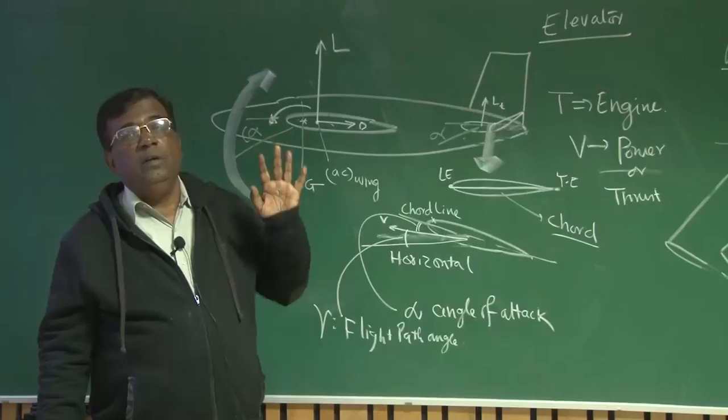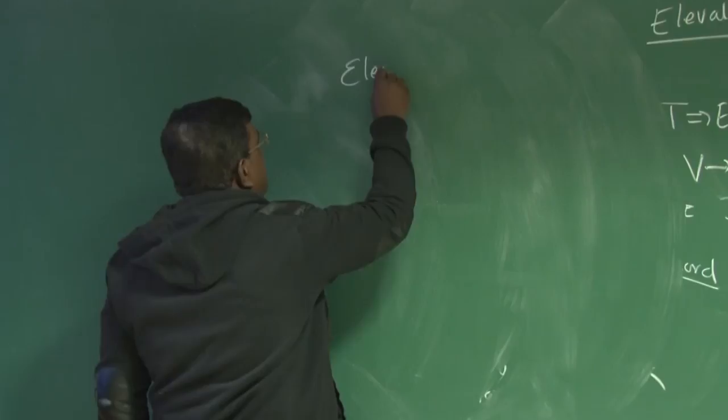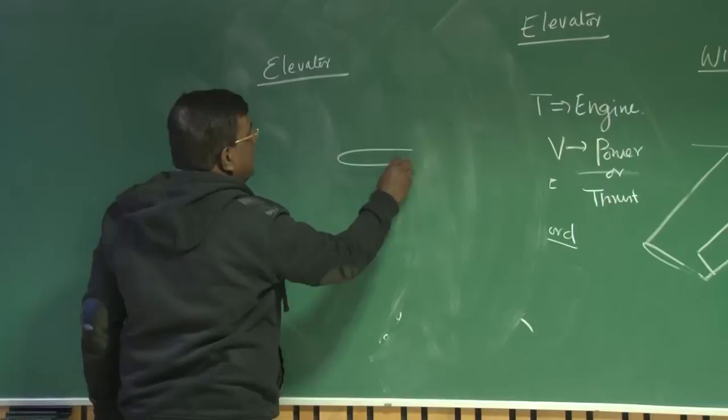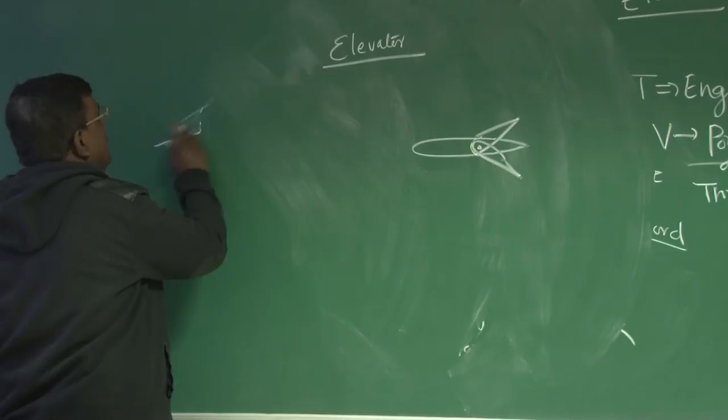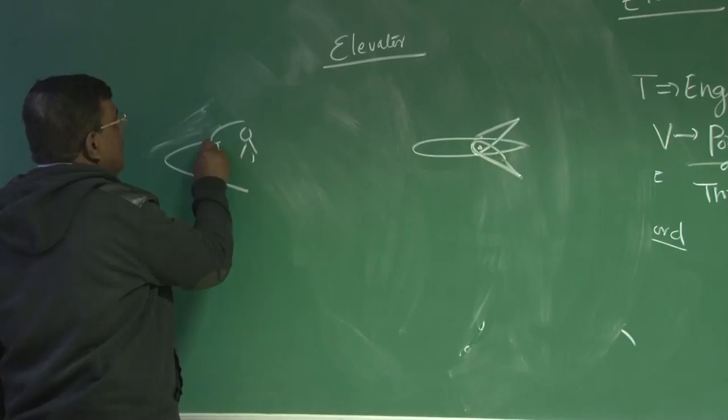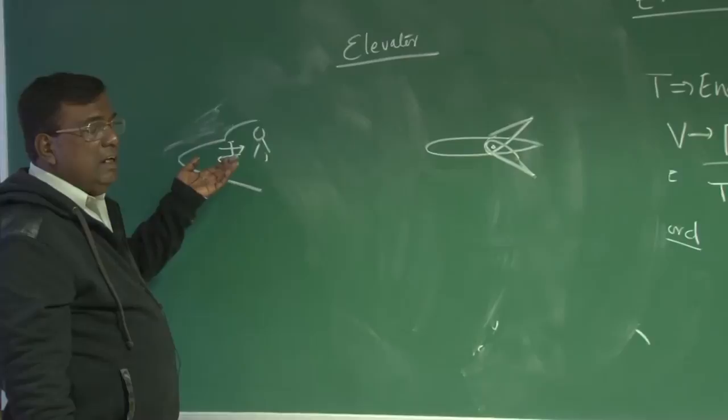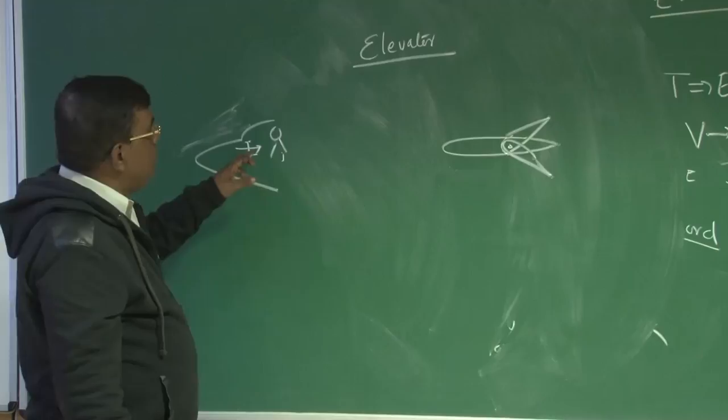Since we are talking about elevator, you see, this is a tail, horizontal tail and part of it, when it moves up and down, we call it, this is an elevator moving up and down. How does it move? The pilot sits here somewhere. Pilot is sitting somewhere else. Some stick is there. He will be pulling it or pushing it. And there are in a smaller aircraft, this pull or push motion gets translated into deflection through a cable and a pulley system, right.